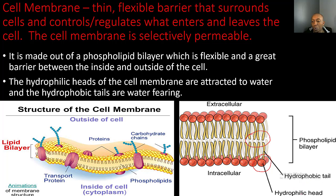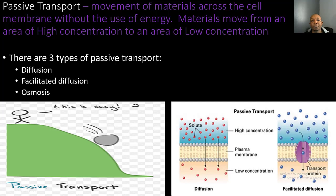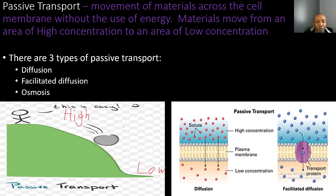Now let's talk about passive transport, which is the movement of materials across the cell membrane without the use of energy. Materials move from an area of high concentration to an area of low concentration. Looking at this picture, a person lets a rock or boulder go down the hill — that rock goes from a high area to a low area, and it doesn't require any energy. That's why we call it passive transport.